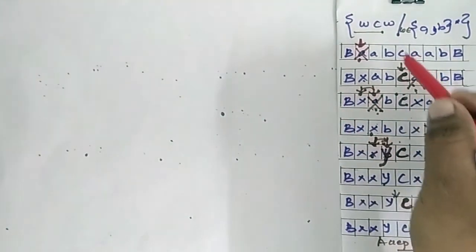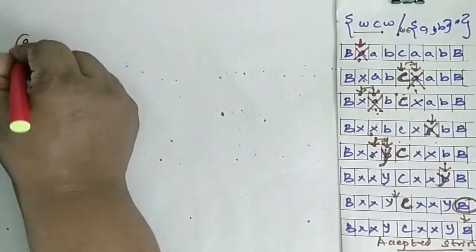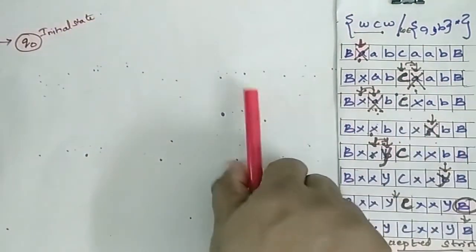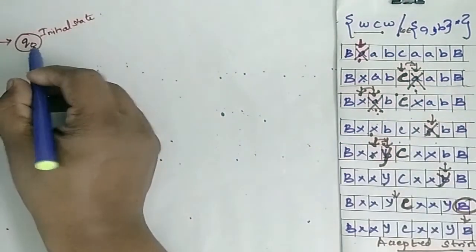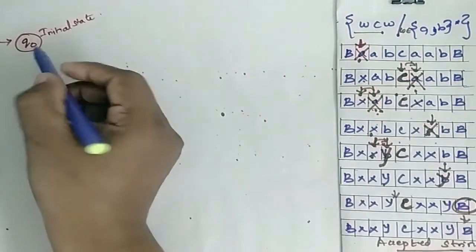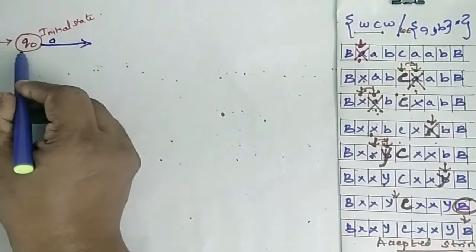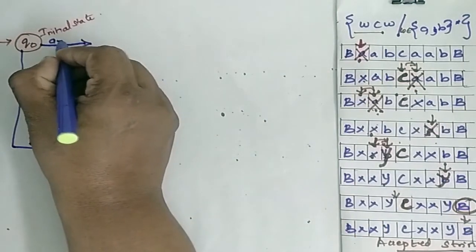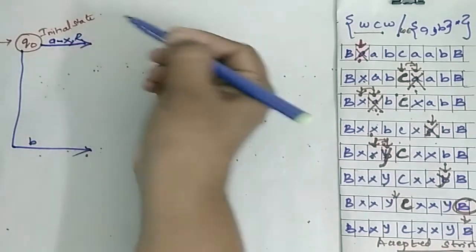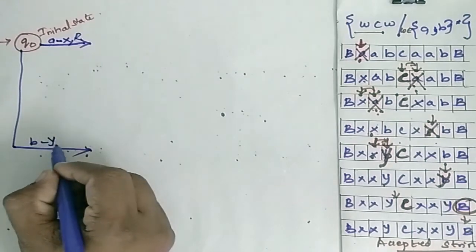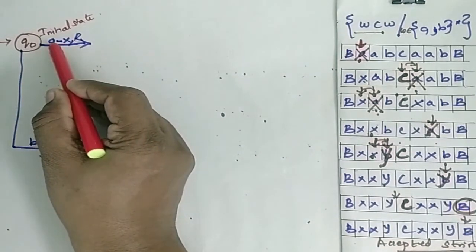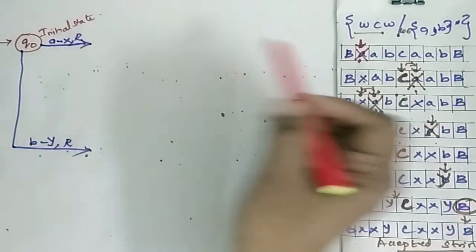Now we are going to build the formal Turing machine for this language. Q0 is the initial state. In Q0, the machine can encounter either A or B. When it encounters A, this A is replaced by X and the head moves right.